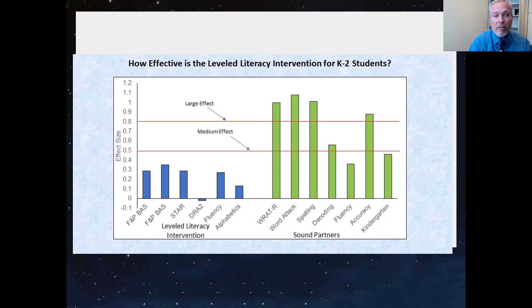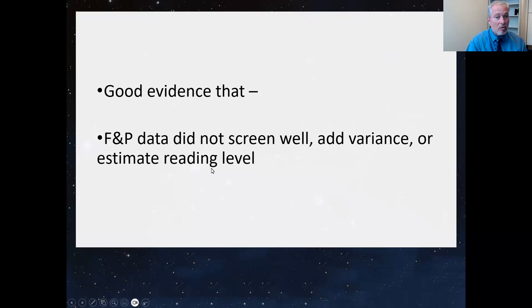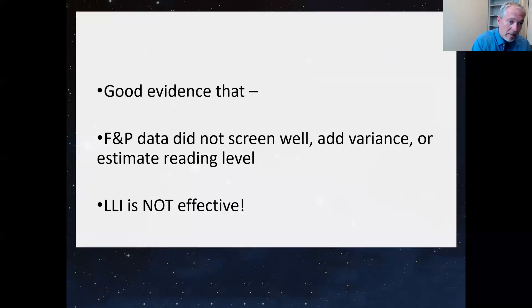They're rating the quality of the research, not the size of the effect. I agree. There's good research out there about LLI, but the good research is basically showing us that F&P data don't screen well, don't add variance, don't estimate reading level very well. LLI is not effective. The convincing research, good research that is rated by those websites as positive evidence suggests there's positive evidence that shows LLI is not effective.